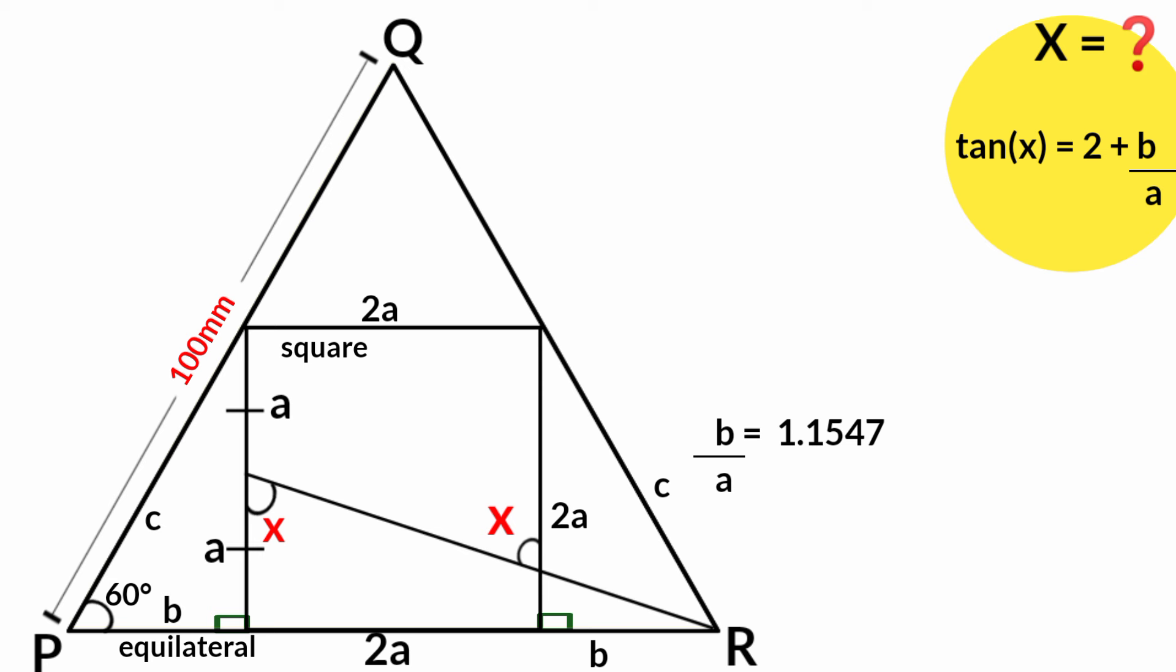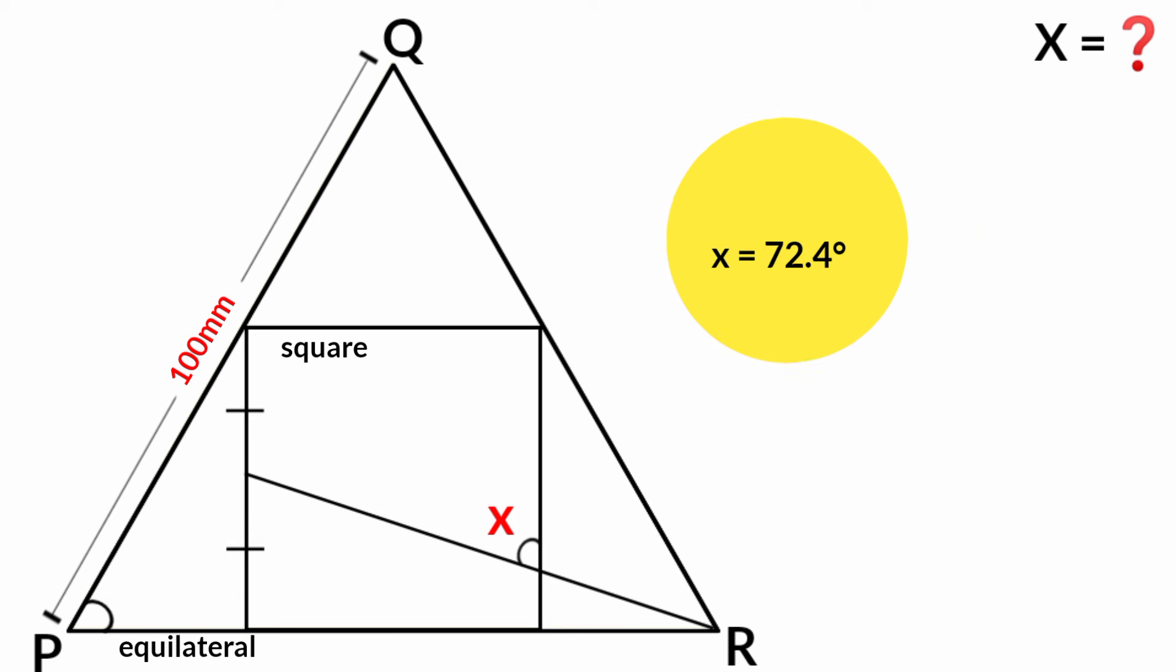Recall this our equation tan x equals 2 plus b over a, and here we found that b over a equals 1.1547. So we substitute it. 2 plus 1.1547 is 3.1547. So tan x equals 3.1547. And from this, the exact value of x will be tan inverse of 3.1547, which is 72.4 degrees. So x equals 72.4 degrees. And that is the size of the angle we are asked to calculate.